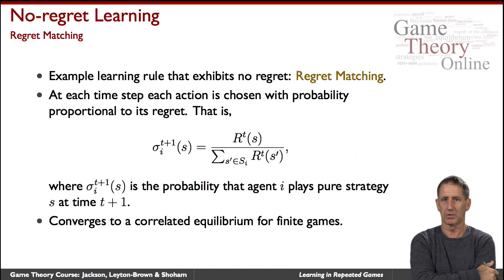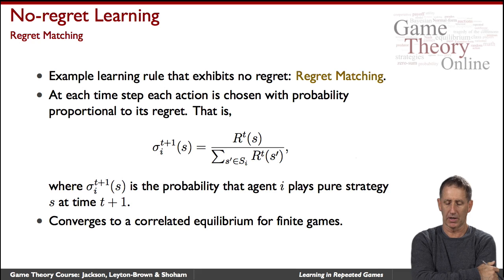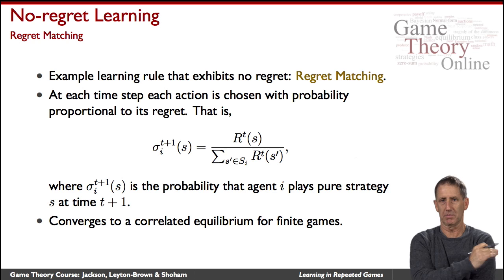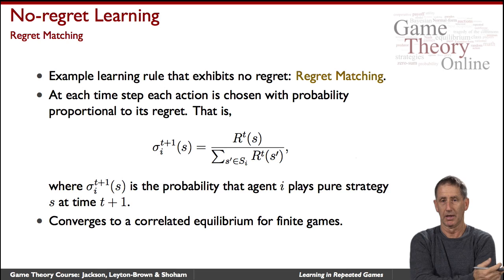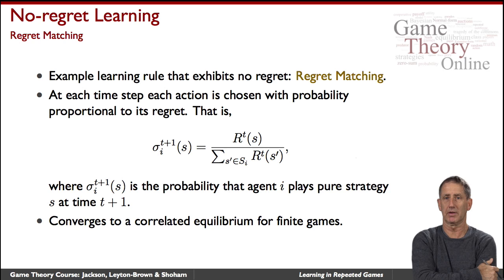Regret matching is a very simple rule with surprisingly strong properties: it is provably no-regret, and furthermore the strategies converge to a correlated equilibrium, at least for finite games that are repeated. Those are two examples of learning rules: one model-based — fictitious play — and another model-free — regret matching, one of the family of no-regret learning methods. As we said at the beginning, the topic of learning in games is a very rich one, but at least we now have a taste for it.